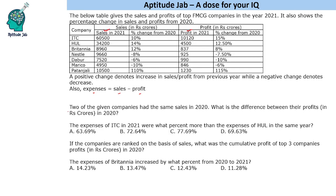Question one says two of the given companies had the same sales in 2020 — what is the difference between their profits in 2020? We need to find those two companies. We don't need to calculate all values. ITC and HUL have very high sales, so even with different percentages they can never be equal to anything else. Looking at Britannia, a 12 percent increase makes it 8960.